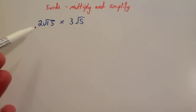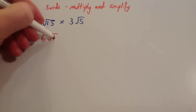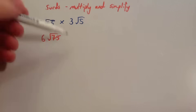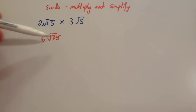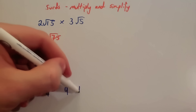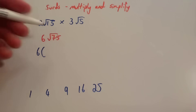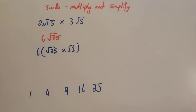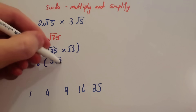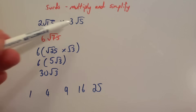This question says: multiply and simplify 2 root 15 multiplied by 3 root 5. Multiply the numbers in front: 2 times 3 is 6. Root 15 times root 5 is root 75. Now it says multiply and simplify, so we need to simplify root 75. Think of your square numbers: 1, 4, 9, 16, 25 — 25 is a factor of 75, and 36 is not. So root 75 equals root 25 times root 3. The square root of 25 is 5, so you get 6 times 5 root 3. That gives you 30 root 3. So 2 root 15 times 3 root 5 equals 30 root 3.